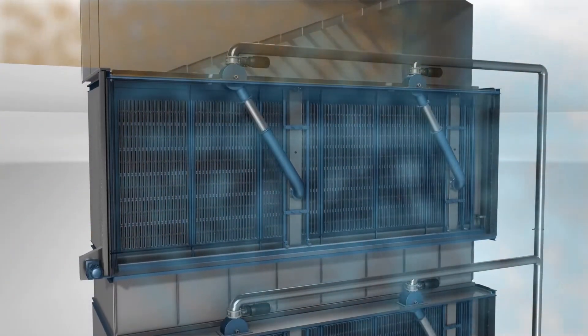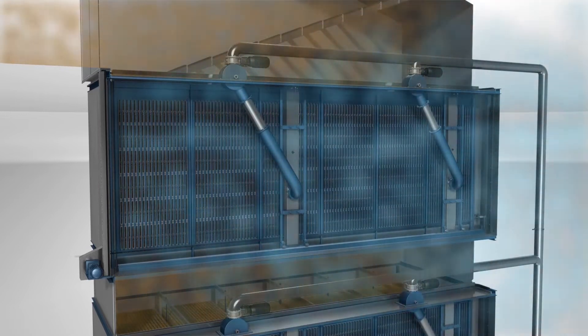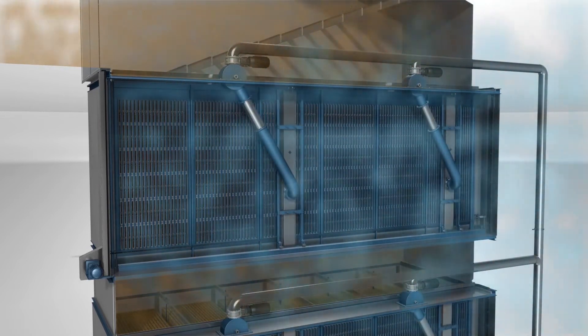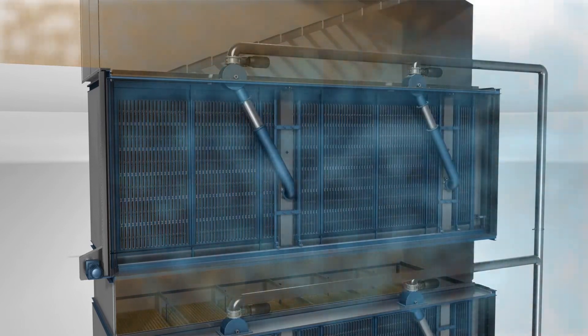The dirty gas flows down through horizontal filter bags to the filter's clean gas side, where the dust is held back by the filter media and forms a filter cake.